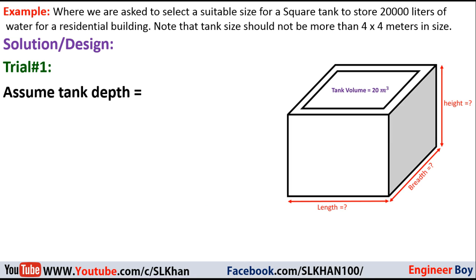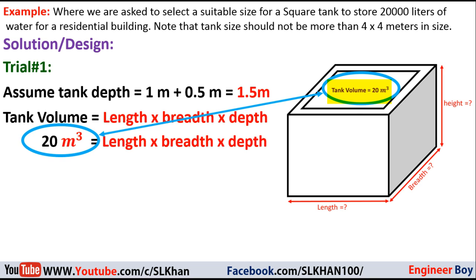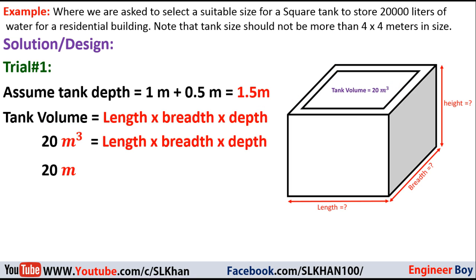Since the tank is square from the top view, the volume of the tank must be length times breadth times depth, which equals the capacity of the tank — 20 cubic meters. From the given conditions we can determine the area of the tank. Since the length and breadth are the same in a square, let me call both 'a', and the depth is known, which is 1.5 meters.